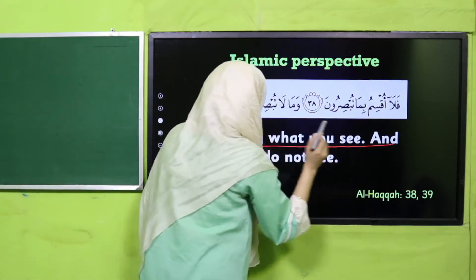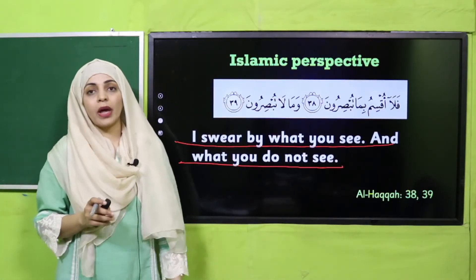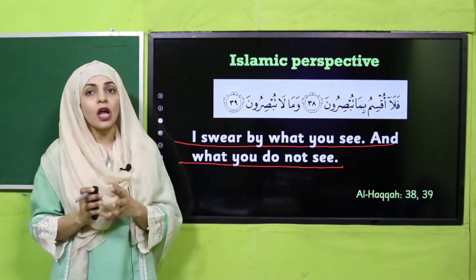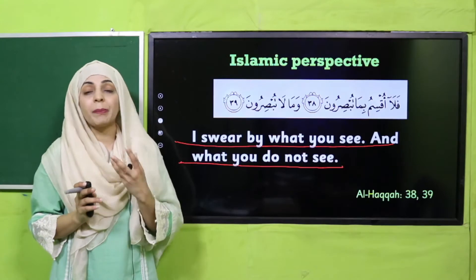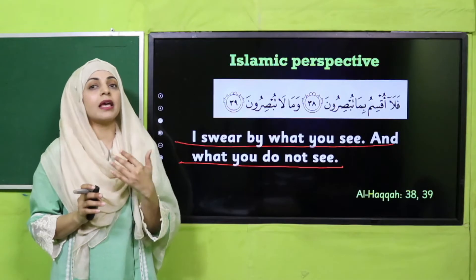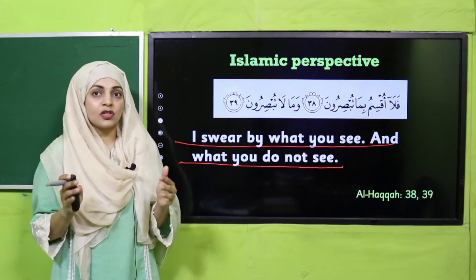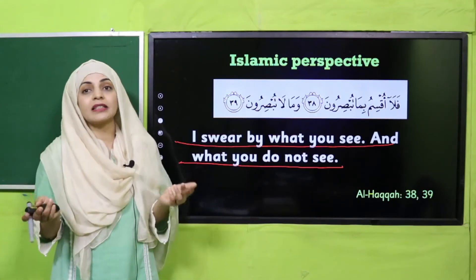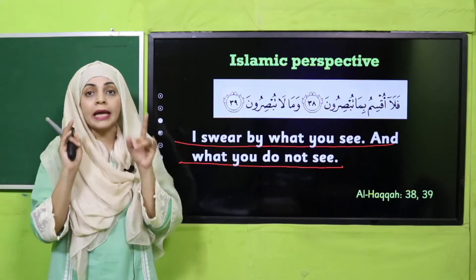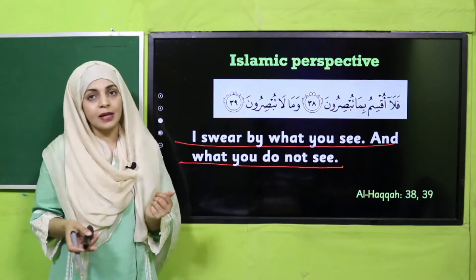Let's quickly move forward towards the Islamic perspective: 'I swear by what you see and what you do not see.' Allah Ta'ala says in the Holy Quran that some things exist which we can see, and some things exist which we cannot see with our eyes. This does not mean that if you cannot see something it does not exist — just like air, you cannot see it but it exists. Similarly, microorganisms exist even if you cannot see them with your naked eyes.